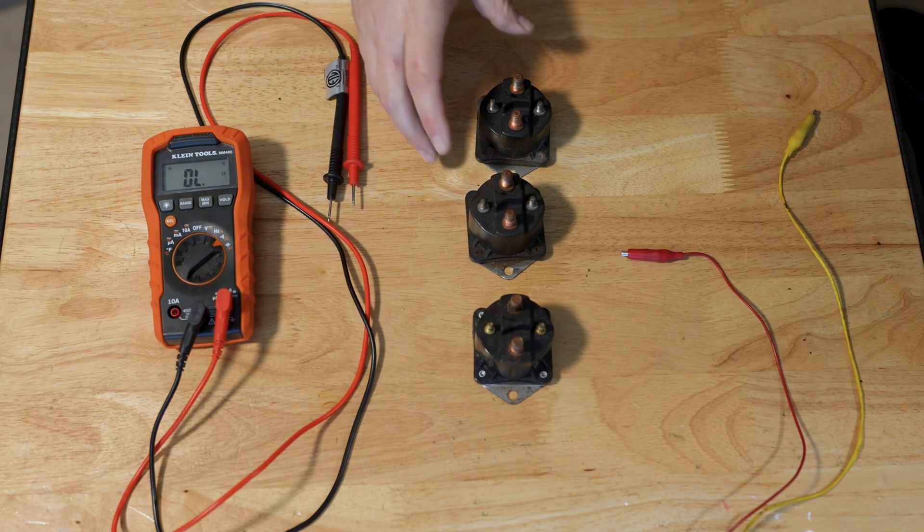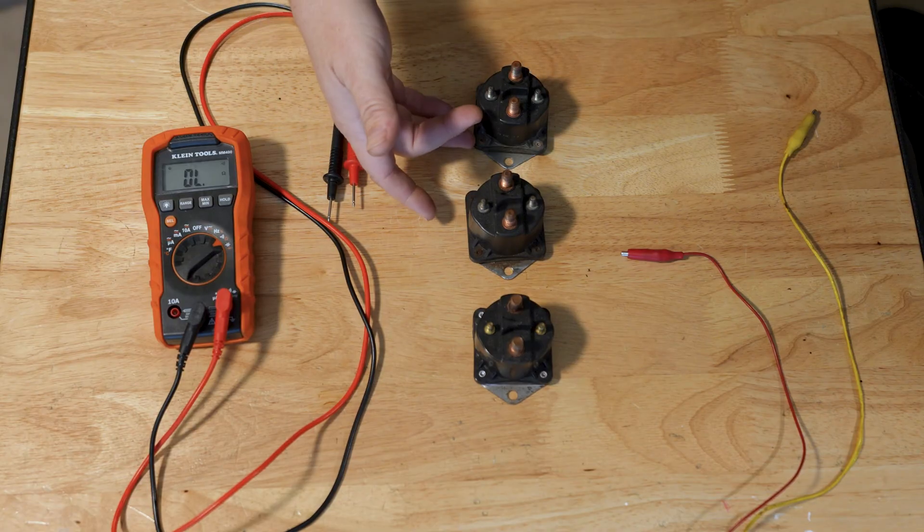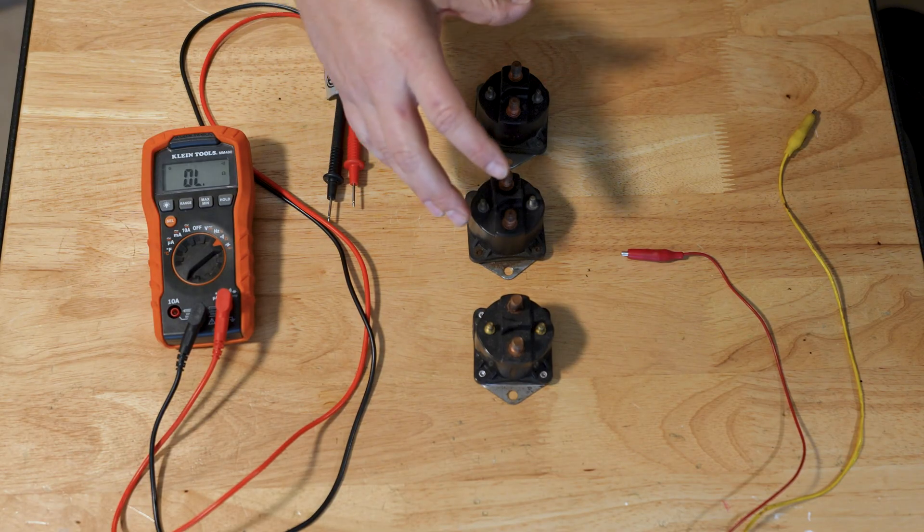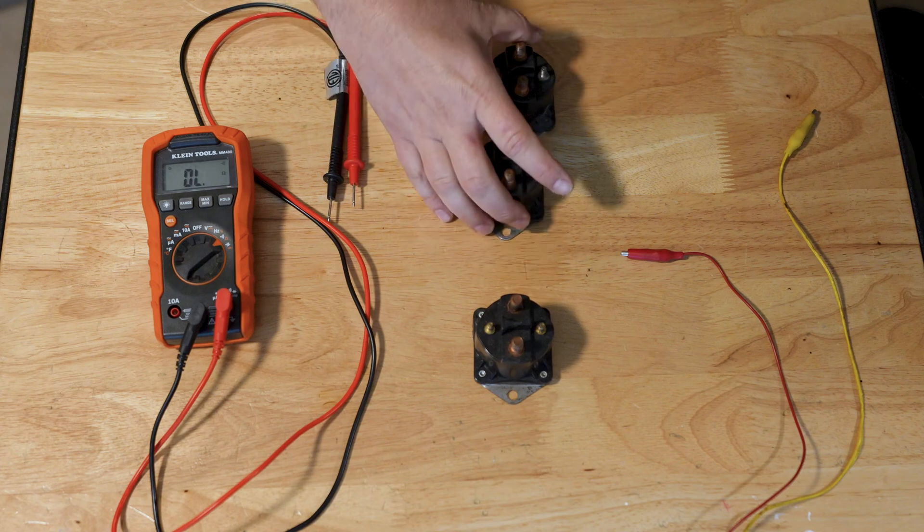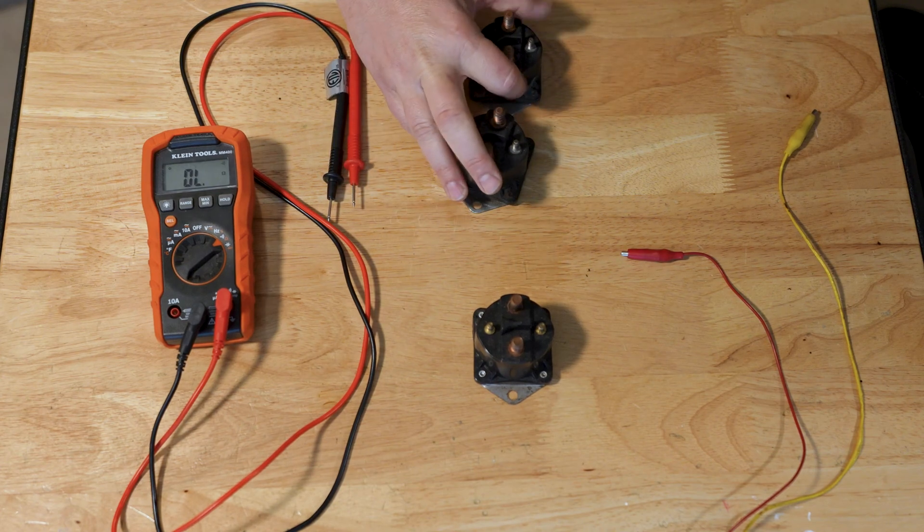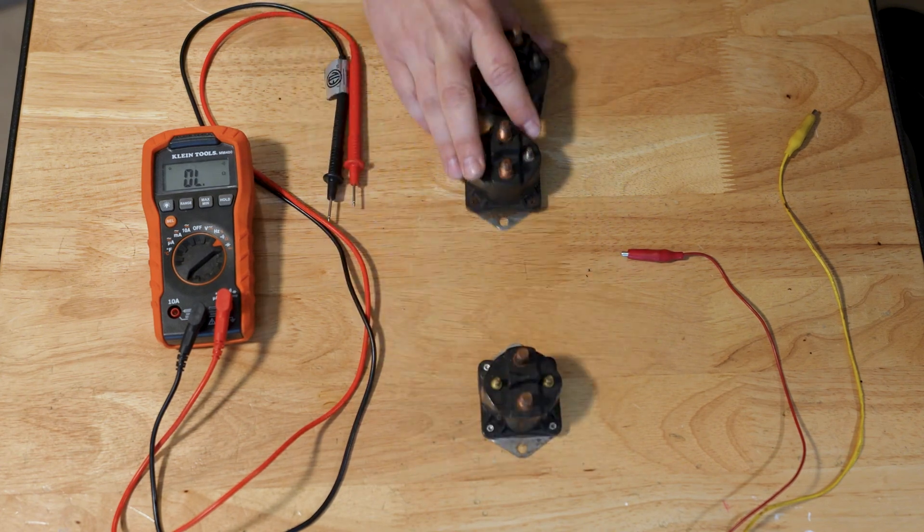Each of these solenoids carries 100 amps and they run in series to enable the winch to draw up to 200 amps. Usually there's two for pulling in and two for letting out.